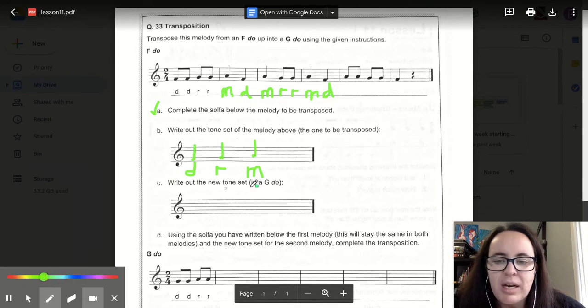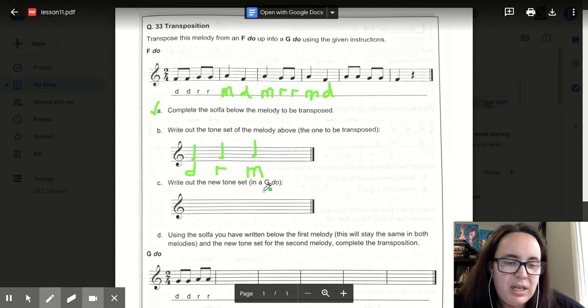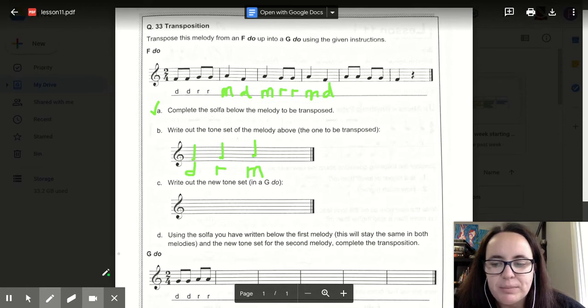Now, we need to write out this new tone set and we're lifting it up by one step. We're going to be starting in G DO. So instead of starting in F DO, we're going to have G as our first sound, which is on line number two. Then we have A as our RE in space two. Then we have B as our ME on line number three. So pause the video here and write out your tone set in G, our transposed up one step tone set.